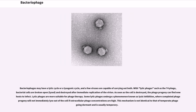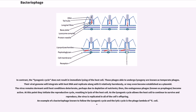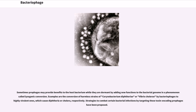In contrast, the lysogenic cycle does not result in immediate lysing of the host cell. Those phages able to undergo lysogeny are known as temperate phages. Their viral genome will integrate with host DNA and replicate along with it relatively harmlessly, or may even become established as a plasmid. The virus remains dormant until host conditions deteriorate, perhaps due to depletion of nutrients; then the endogenous phages, known as prophages, become reactivated, initiating the reproductive cycle and resulting in lysis of the host cell. As the lysogenic cycle allows the host cell to survive and reproduce, the virus is replicated in all of the cell's offspring. Sometimes prophages may provide benefits to the host bacterium while dormant by adding new functions to the bacterial genome in a phenomenon called lysogenic conversion.